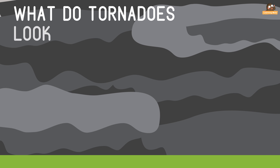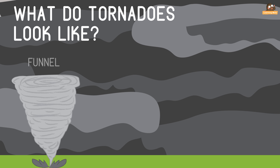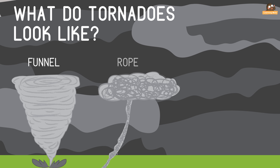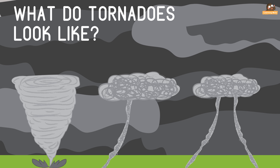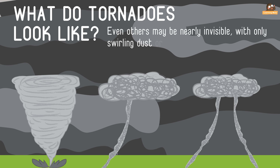What do tornadoes look like? Tornadoes can appear as a funnel shape or a thin rope-like shape. Some have a churning, smoky look to them. Others contain multiple vortices with small tornadoes rotating around. Even others may nearly be invisible, with only swirling dust or debris at ground level.